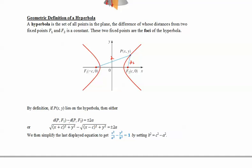Using the distance formula, we get square root of (x + c)² + y² minus square root of (x - c)² + y² equals plus or minus 2a.